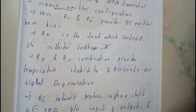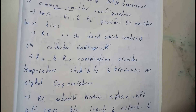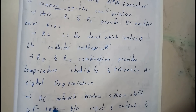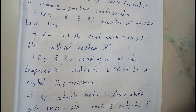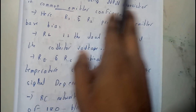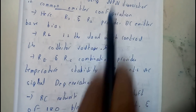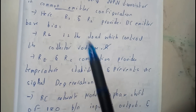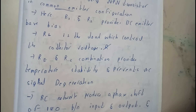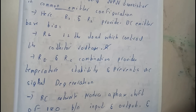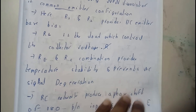Whatever signal we give, it is going to increase it but not damage or decrease it. The RC network provides a phase shift of 180 degrees between input and output — the resistors and capacitors help achieve that 180 degrees. Similarly, the CE amplifier gives 180 degrees, so the total phase shift is 360 degrees.